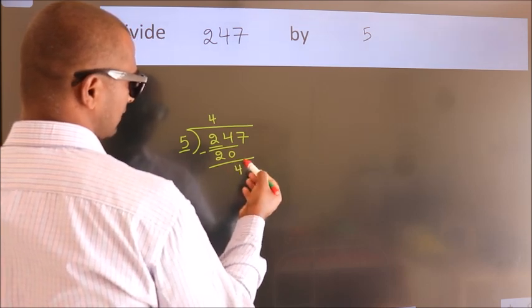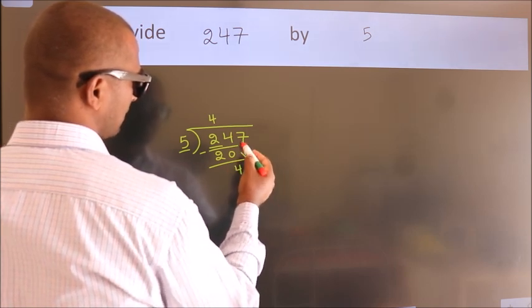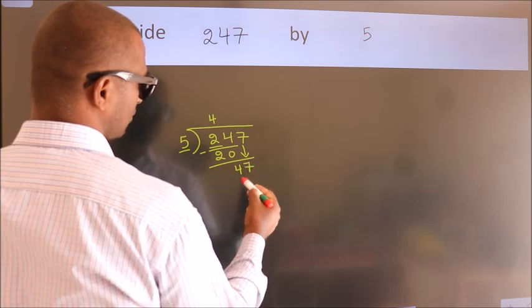After this, bring down the beside number. So 7 down. So 47.